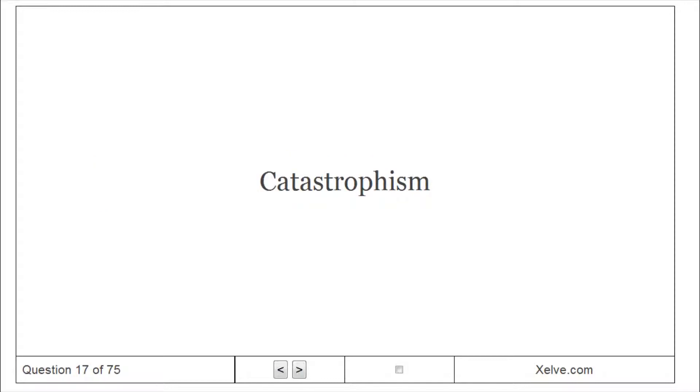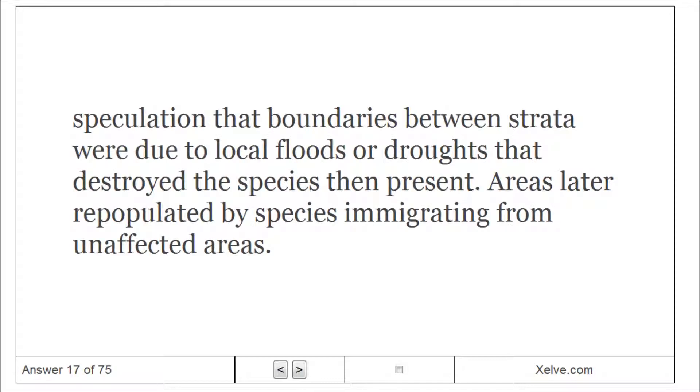Catastrophism: Speculation that boundaries between strata were due to local floods or droughts that destroyed the species then present. Areas later repopulated by species immigrating from unaffected areas.